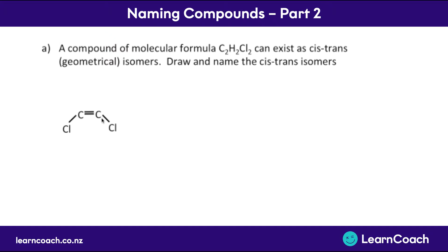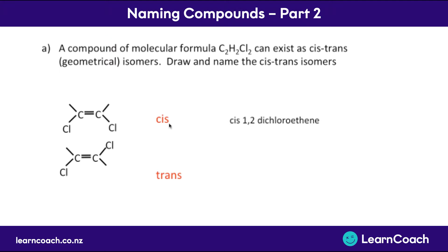For the cis isomer, we want to have the chlorines on the same side, whereas for the trans isomer, we want them on the opposite side. Then we add our hydrogens on. Now we've drawn them, we also need to name them. The top one has chlorines on the same side, so it's cis, and the bottom is trans. The actual name is 1,2-dichloroethene — 'eth' for two carbons and '-ene' for an alkene. The bottom is exactly the same except for the 'trans': trans-1,2-dichloroethene.